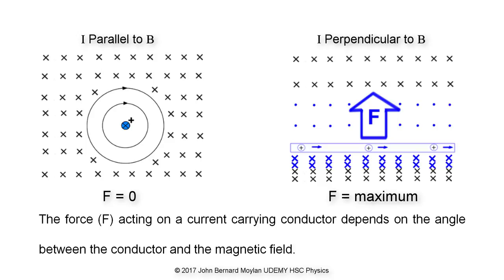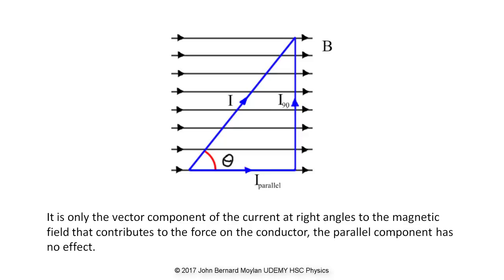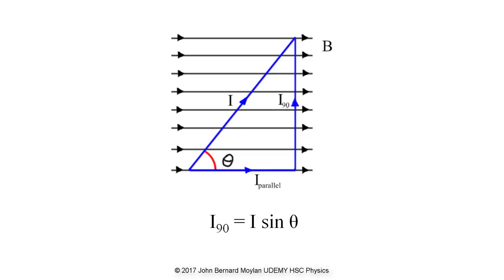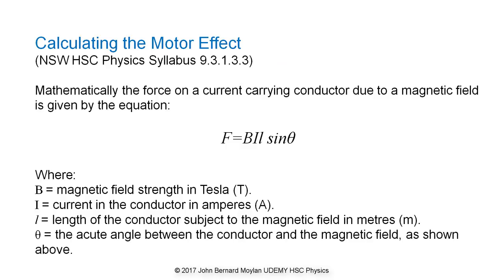For a current carrying conductor oriented at some angle theta to the magnetic field, we can resolve the current vector into a component at 90 degrees to the magnetic field and a component parallel to the magnetic field. It is only the vector component oriented at 90 degrees to the magnetic field that experiences the force due to the presence of the magnetic field. This component, labelled as i90, is equal to i sin theta.